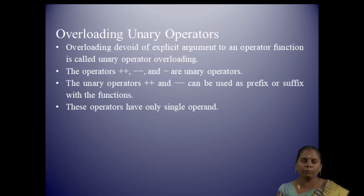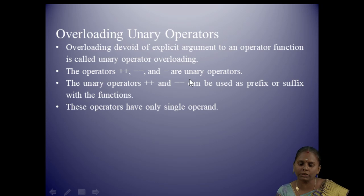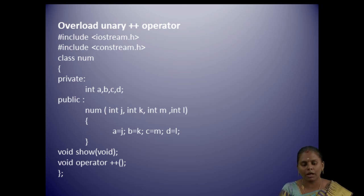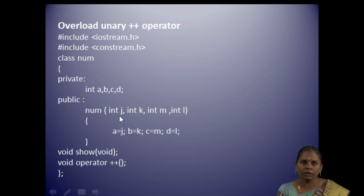Next we are going to see how to implement operator overloading for unary and binary operators. For unary operators we have 3 operators: increment (++), decrement (--), and unary minus. We need only a single operand, that's why we call them unary operators. Here I am taking the increment operator. For this purpose I am defining a class called num, with 4 integer variables: a, b, c, d declared in the private section.